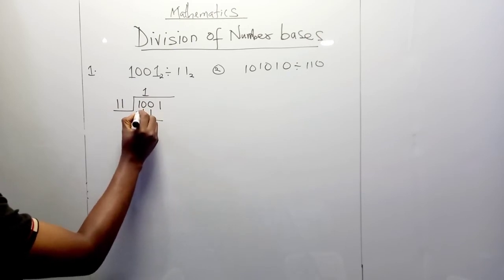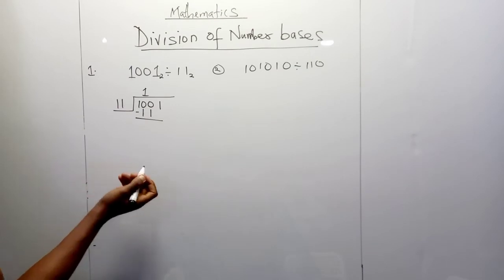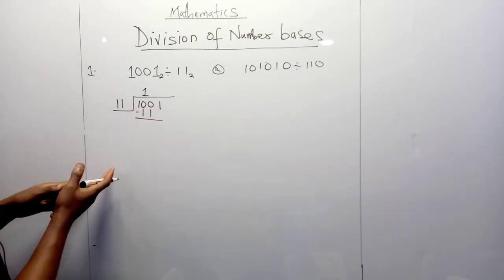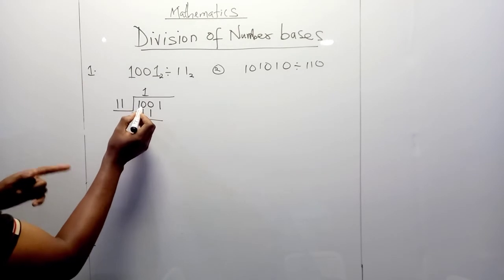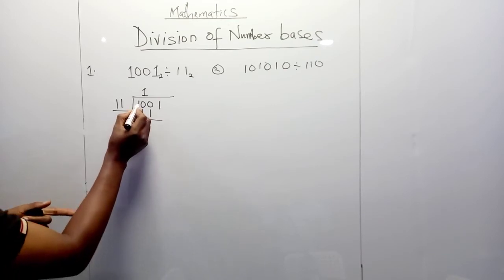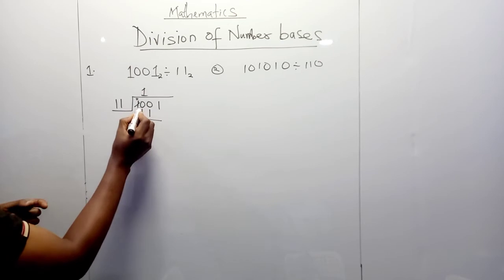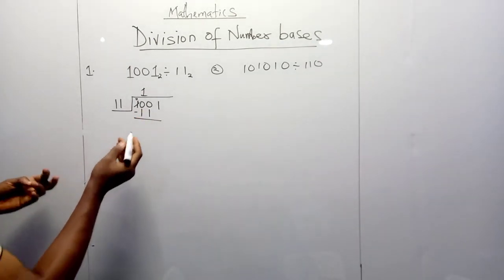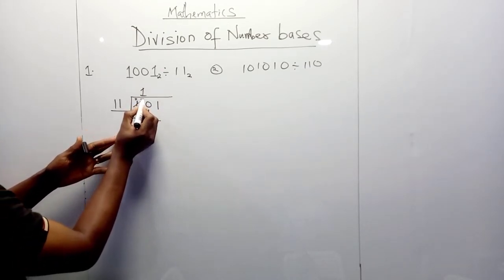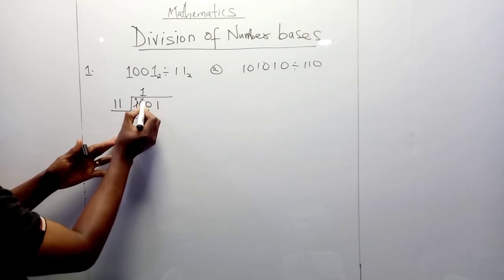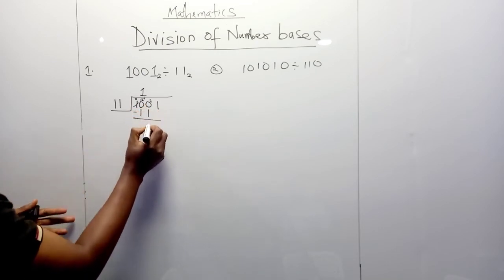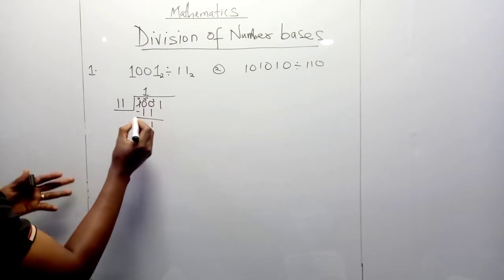The next thing we're going to do is subtract. How do we subtract binary numbers? 0 minus 1 is not possible — you cannot take 1 from nothing. So we borrow from the nearest number. That position is also 0, so we come further and take 1 from there, leaving 0. The borrowed 1 becomes 2 because numbers are in base 2. We then borrow again for the destination position, leaving 1 there. So 2 minus 1 gives 1, and 1 minus 1 gives 0.